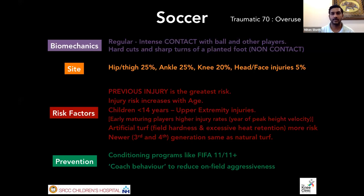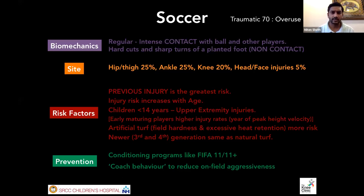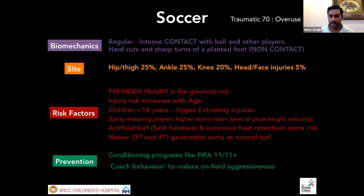Children under 14 in soccer have a propensity for upper extremity injuries. The year of peak height velocity is important because early-maturing players show higher injury rates. Artificial turf carries more risk, though newer third and fourth generation turfs are comparable to natural surfaces. The IOC has developed the FIFA 11+ conditioning program, proven by research to reduce soccer injuries, especially non-contact ones. Coaches should also enforce stricter discipline on the field to reduce children's on-field aggressiveness.